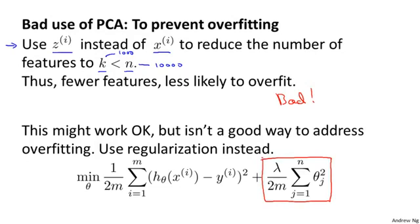And the reason is, if you think about how PCA works, it does not use the labels y. You're just looking at your inputs xi and you're using that to find a lower dimensional approximation to your data. So what PCA does is it throws away some information. It reduces the dimension of your data without knowing what the values of y is. Using PCA this way is probably okay if 99% of the variance is retained. But it might also throw away some valuable information.